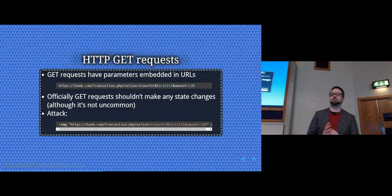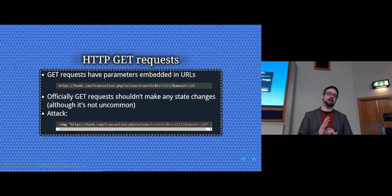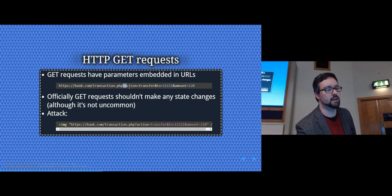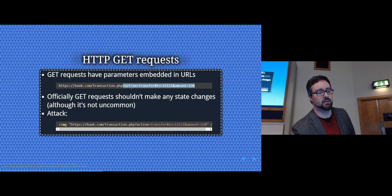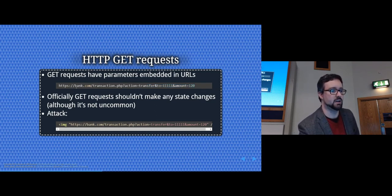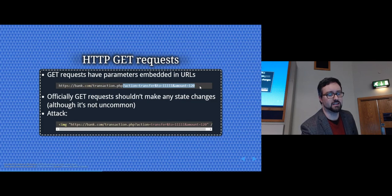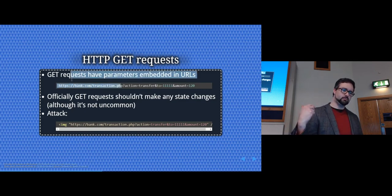There are essentially two main attack types depending on the HTTP request used. GET requests encode all parameters in the URL — for example, bank.com/transaction with account and amount parameters sent along in the URL. POST requests don't expose those details in the URL; they're sent as form fields instead.